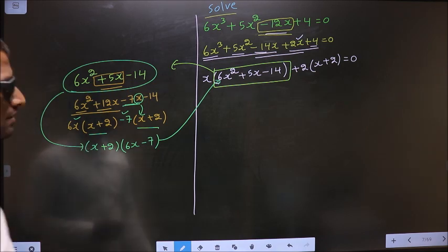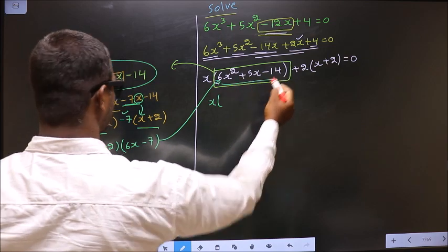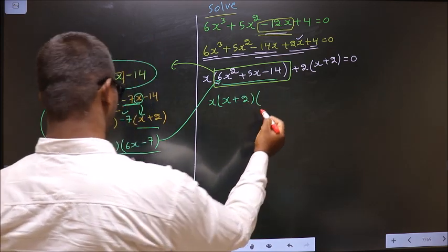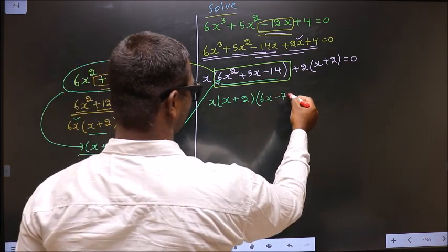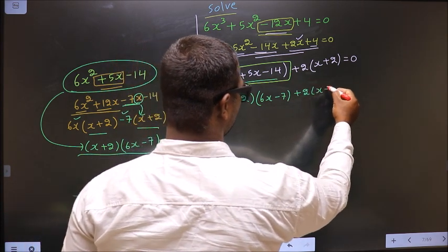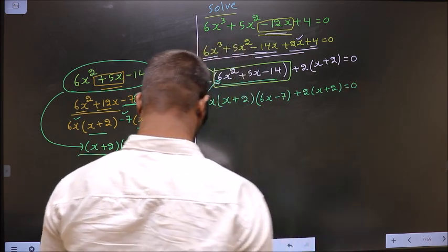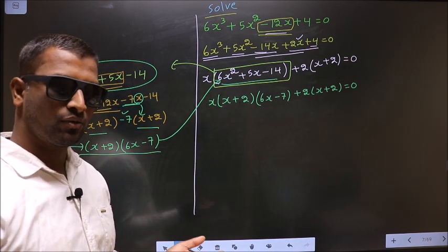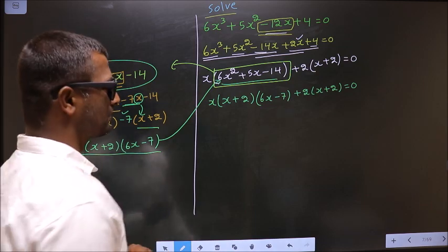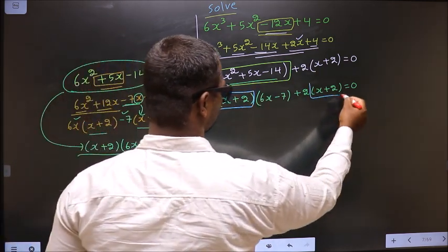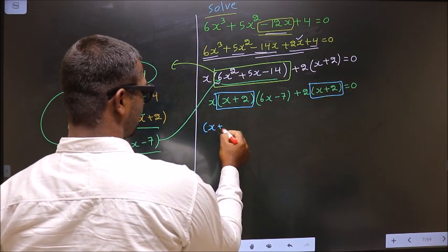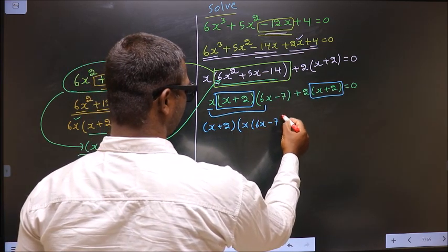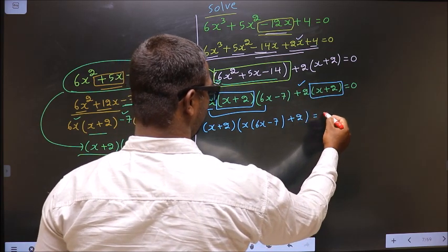Let us replace. So x — in place of this quadratic — now write this: that is x + 2 times 6x - 7. Here no change: plus 2(x + 2) = 0. Now from this entire equation, what can you take out common? It is x + 2. So x + 2 outside; here you are left with x(6x - 7), and here you are left with plus 2, equal to 0.